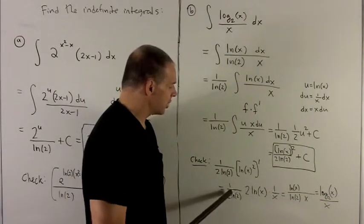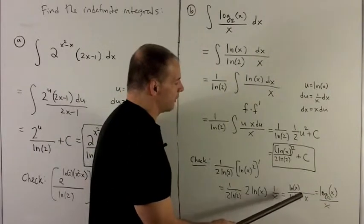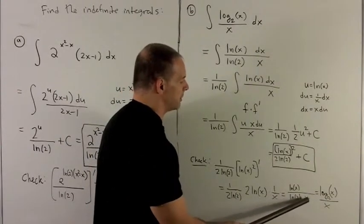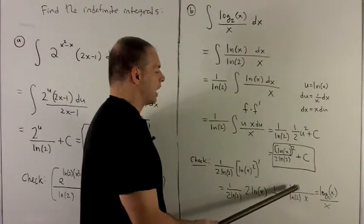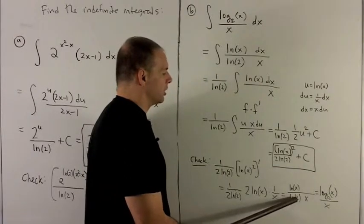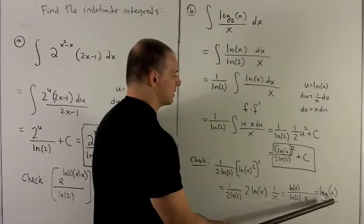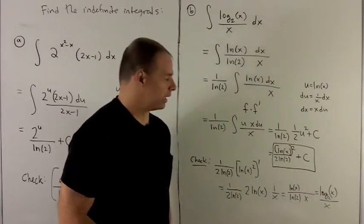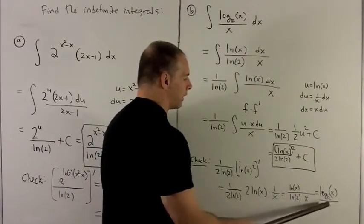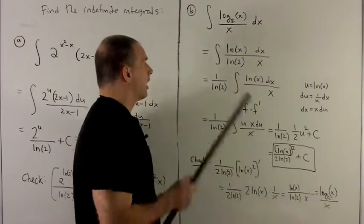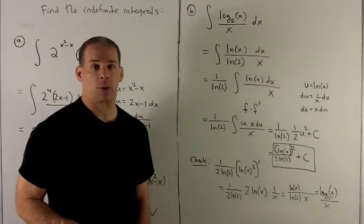The 2s cancel. So we're left with natural log of x over natural log of 2 times x. But now remember, natural log of x over natural log of 2 is just log of x to the base 2. That's the formula I used in the beginning. All of that over x. And then we notice I have my integrand, so my check works out.